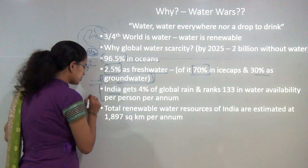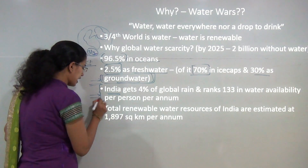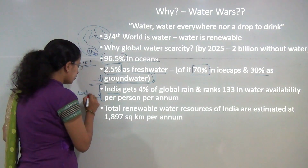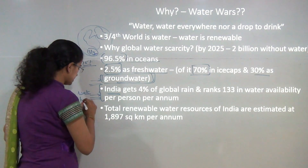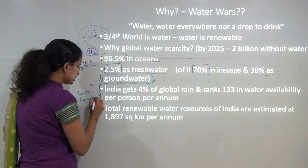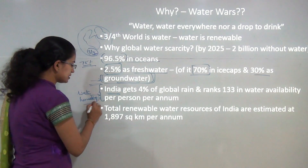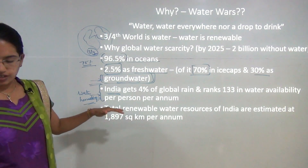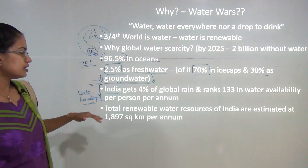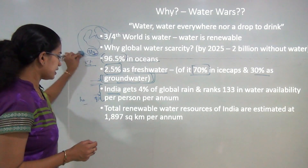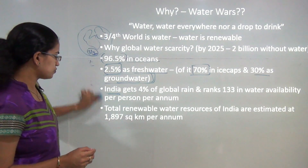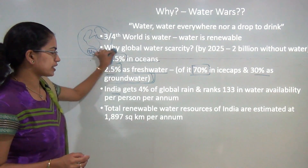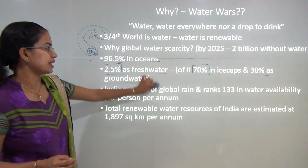India is however trying to improve its ranking by means of various water harvesting techniques that we will understand later in this class. Of the total renewable resources, India accounts for nearly 1897 square kilometers per annum.